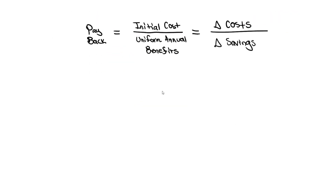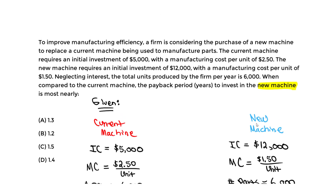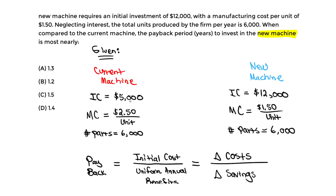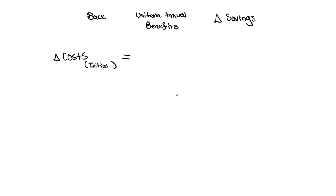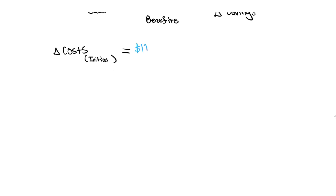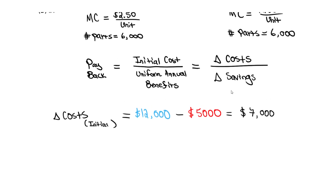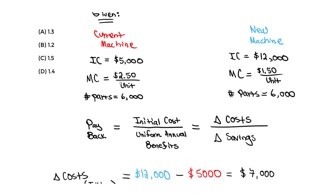For the initial cost, we take the new machine's cost of $12,000 minus the current machine's cost of $5,000, which gives us $7,000. This is the initial investment that goes on top of the payback period equation. Now we need to find the uniform annual benefits — the savings per year — which go on the bottom.